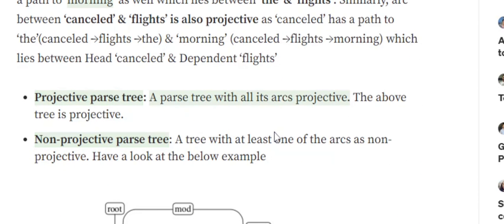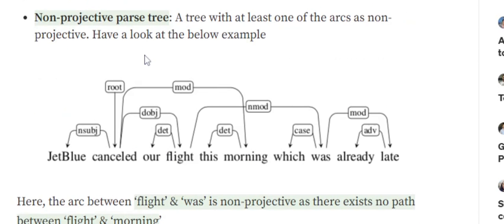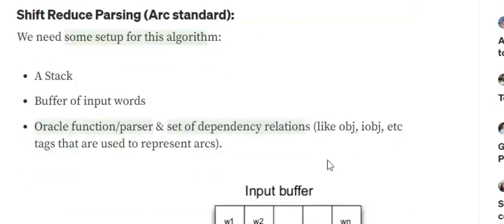A projective parsing tree is one where all arcs are projective — for every arc between a head and a dependent, the head can reach all words lying between them. A non-projective parsing tree has at least one non-projective arc. For example, in 'JetBlue cancelled our flight this morning which was already delayed', there is an arc between 'flight' and 'was', but the head cannot reach 'morning' which lies between them, making it a non-projective arc and thus a non-projective tree.